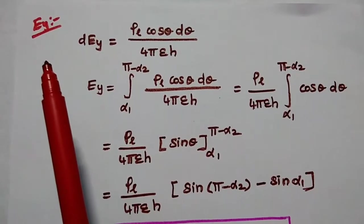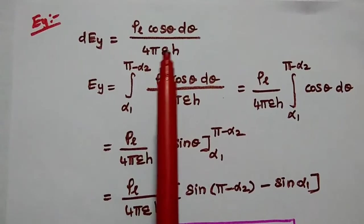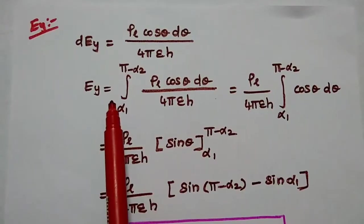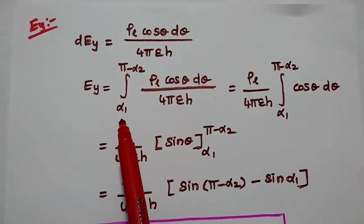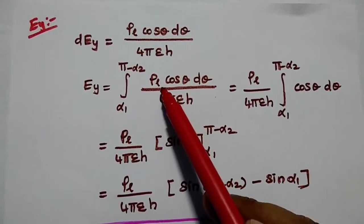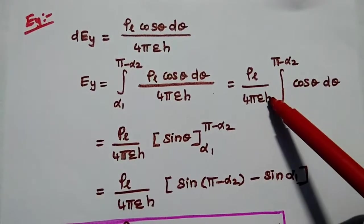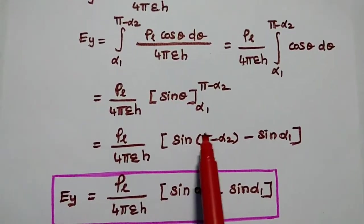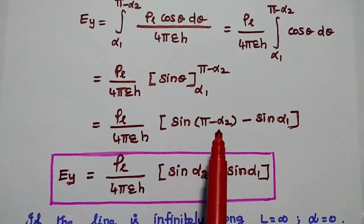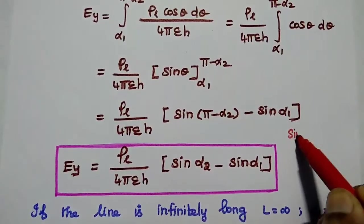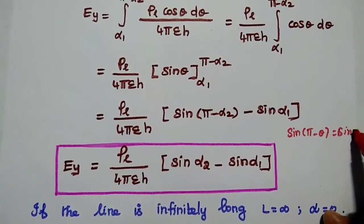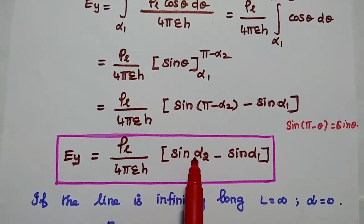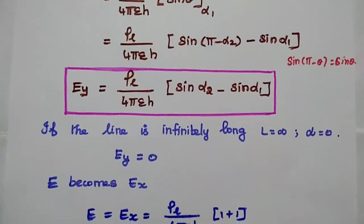Similarly, Ey can be found. dEy = ρL·cosθ·dθ / 4πεh. Integrating from α₁ to π − α₂: Ey = (ρL / 4πεh) · ∫ cosθ dθ = (ρL / 4πεh) · [sinθ] from α₁ to π − α₂. This gives sin(π − α₂) − sinα₁. Using sin(π − θ) = sinθ, we get Ey = ρL / (4πεh) · (sinα₂ − sinα₁).